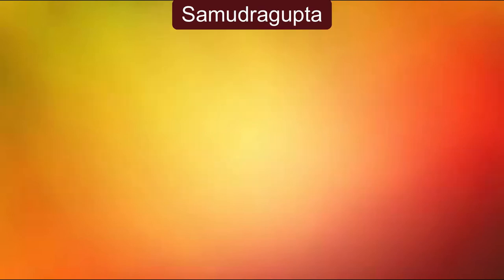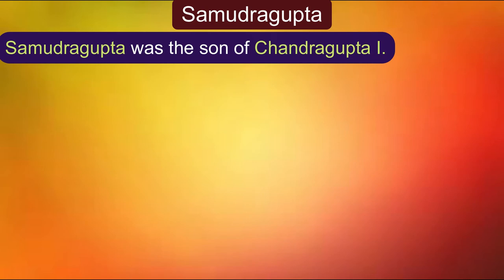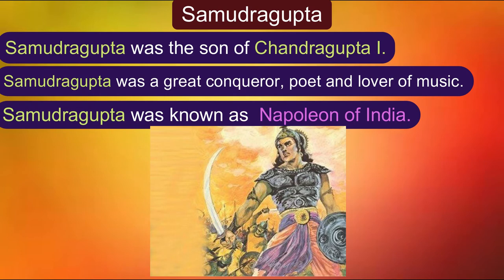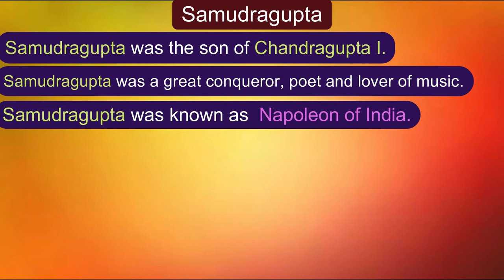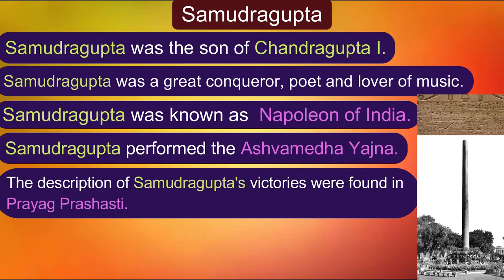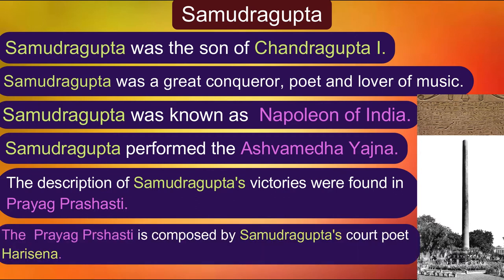Chandragupta I was succeeded by his son Samudragupta. Samudragupta was a great conqueror, poet, and lover of music. He was known as the Napoleon of India. Samudragupta is also known for the performance of Ashwamedha Yajna. The description of Samudragupta's victories were found in Prayag Prashasti, composed by his court poet Hari Sena.